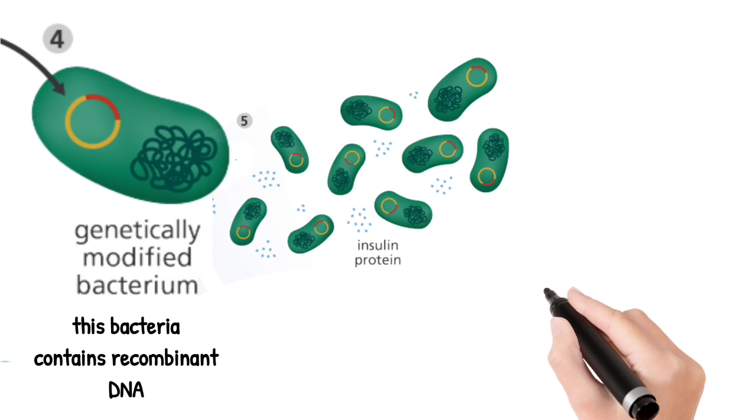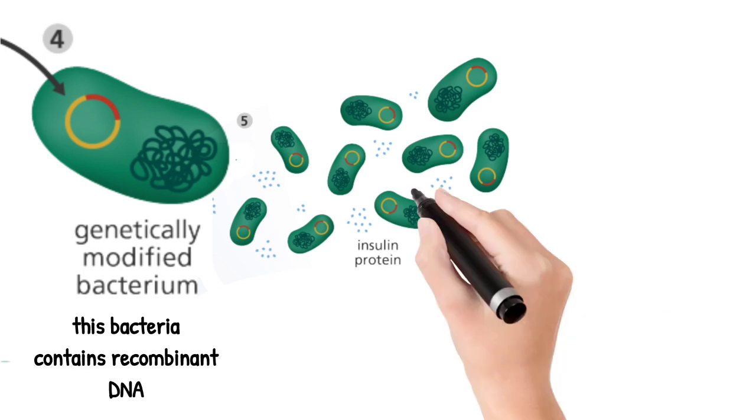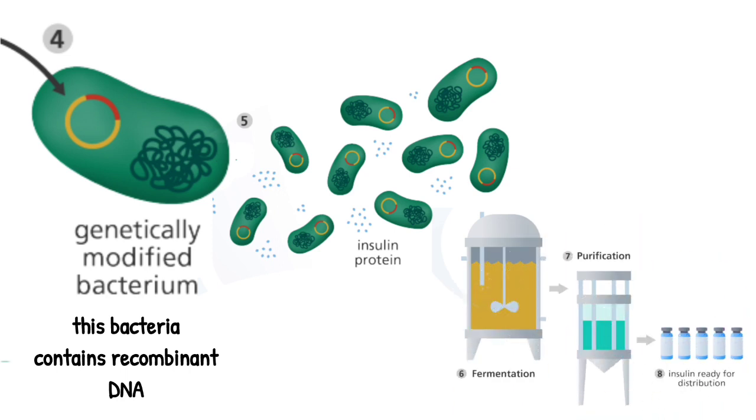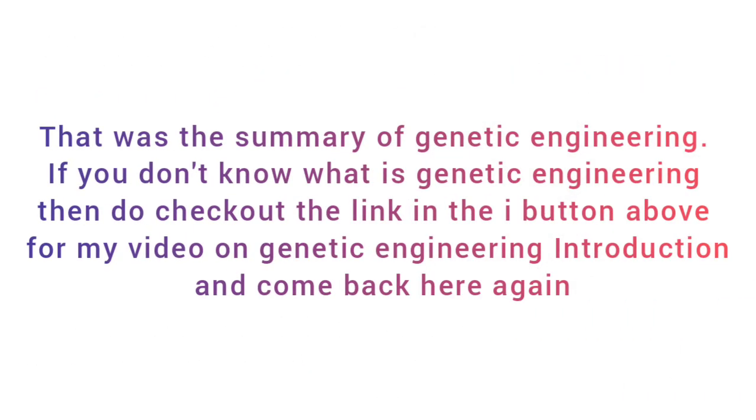This bacterium replicates itself and produces insulin protein. This goes through some biochemical processes like fermentation, purification, etc. for obtaining the final product. That was the summary of genetic engineering. If you don't know what is genetic engineering, then do check out the link in the i button above.